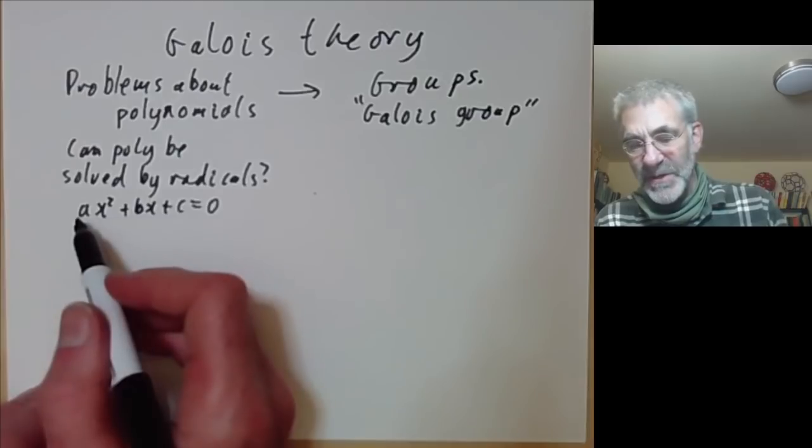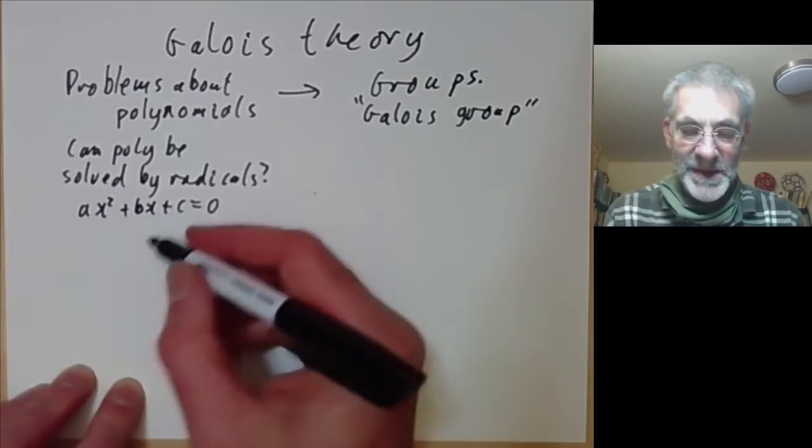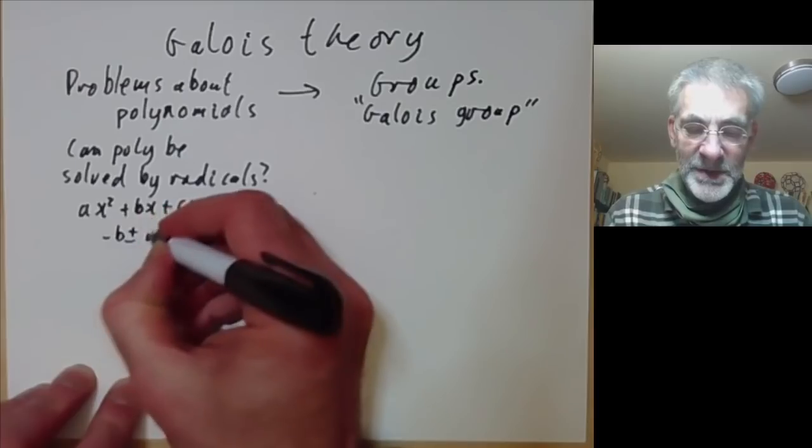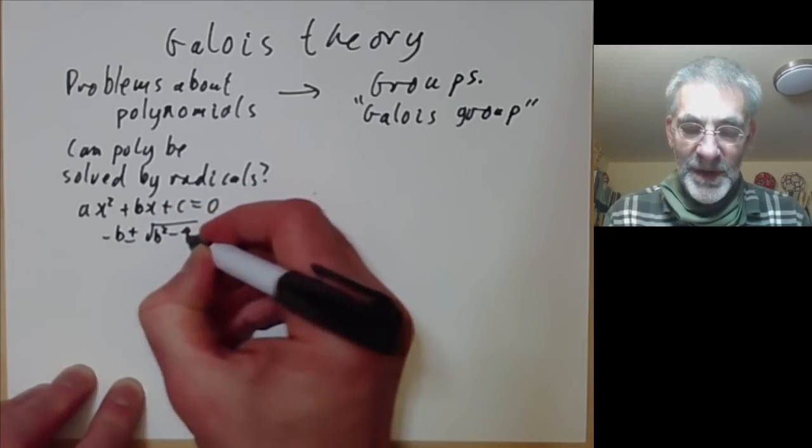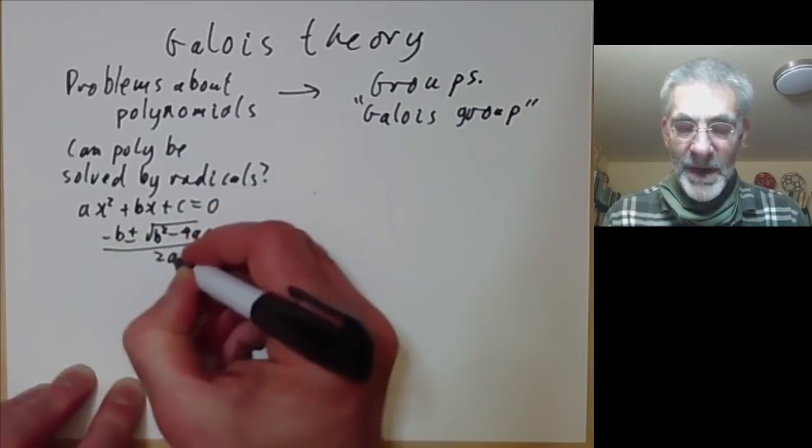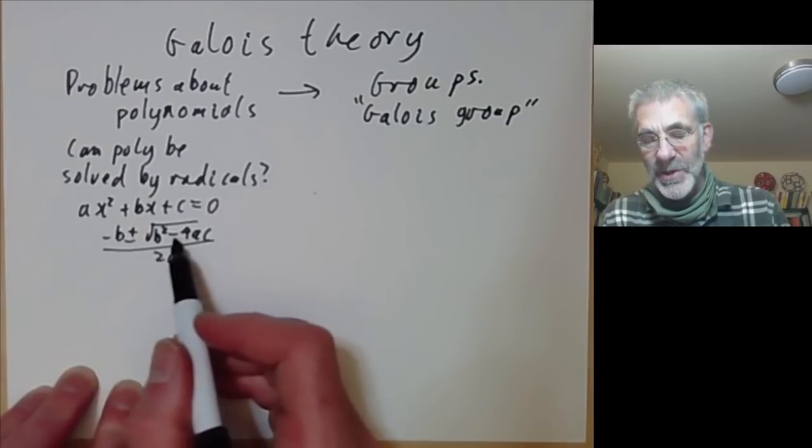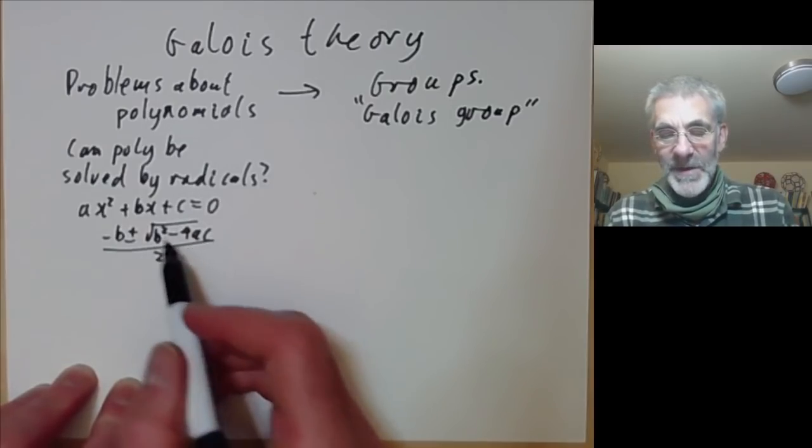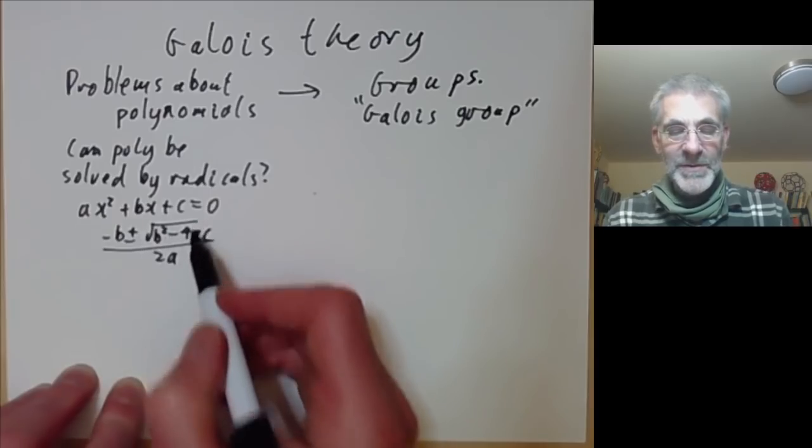If you've got a polynomial ax squared plus bx plus c equals zero, you can solve it by radicals, meaning you can write down an expression for x in terms of a, b and c. x is minus b plus or minus the square root of b squared minus 4ac all over 2a. This expression only involves the usual four arithmetic operations together with taking nth roots.